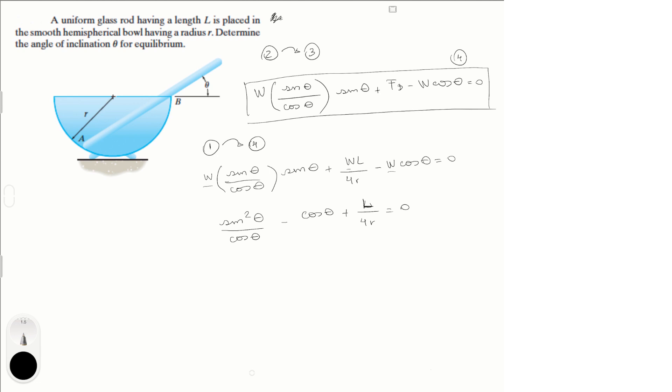Cosine of theta, this can be replaced by sine squared theta minus cosine squared theta, and this is basic trigonometry, plus L over 4R cosine of theta.